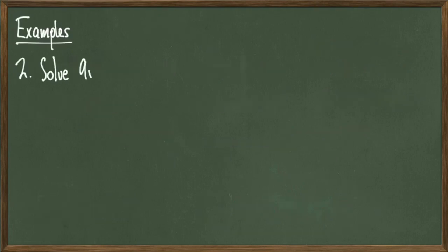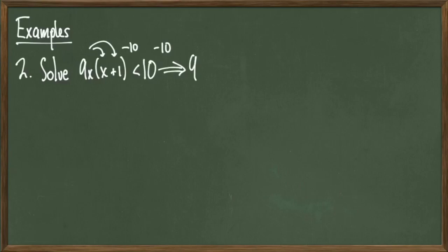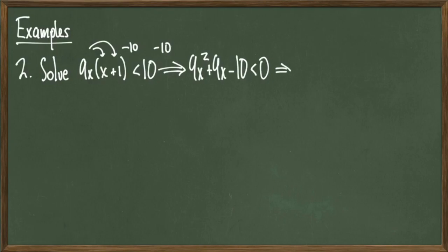Let's do another example. Consider 9x(x + 1) < 10. This isn't in the form we want, so I'll distribute the 9x and subtract 10 from both sides to get 9x² + 9x - 10 < 0. This factors into (3x - 5)(3x + 2), and I write this factored inequality less than 0.